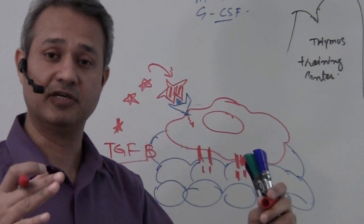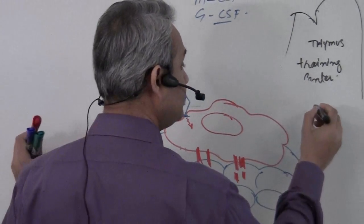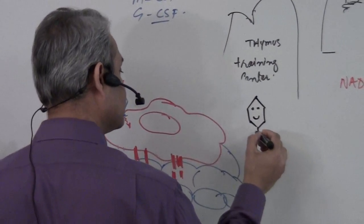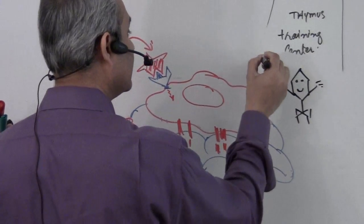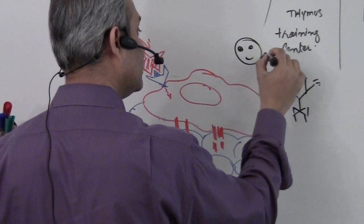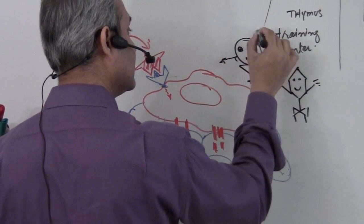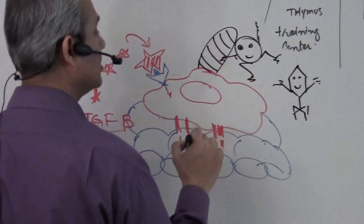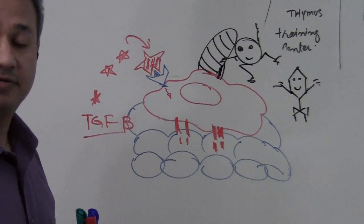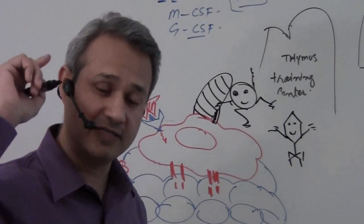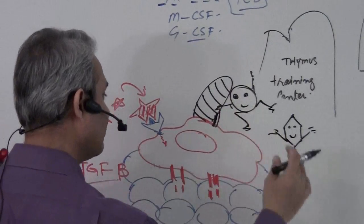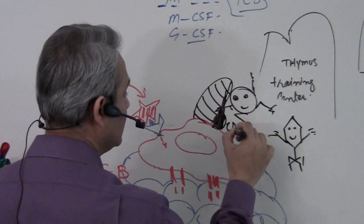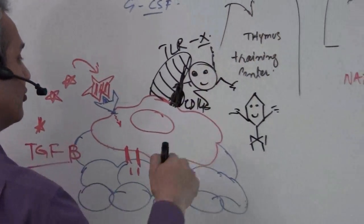Now here comes a pathogen — say a virus or a bacterium. These pathogens are just present in the environment. All of a sudden, the macrophage's toll-like receptor recognizes the bacteria. As soon as it touches the pathogen, the receptor becomes activated along with CD14. CD14 and TLR — it could be TLR2 or TLR4 — send another signal inside the macrophage.